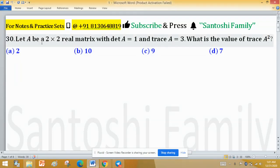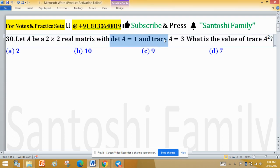Let A be a 2 by 2 real matrix with determinant of A equal to 1 and trace of A equal to 3. What is the value of trace of A squared?